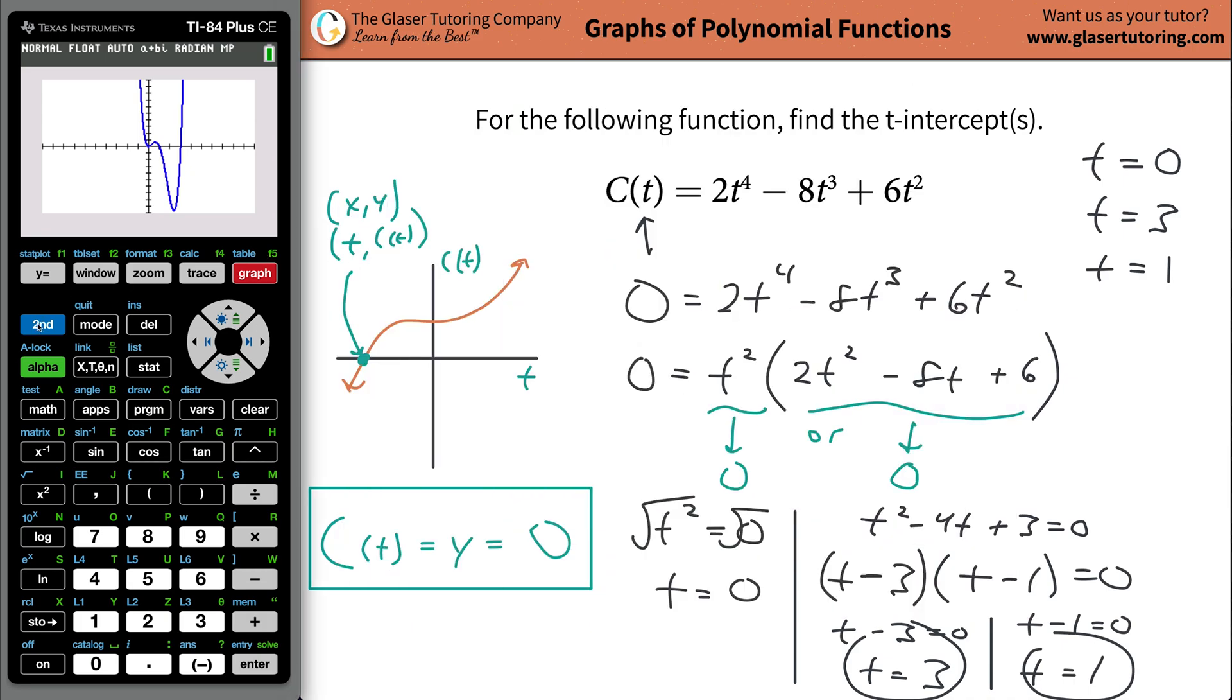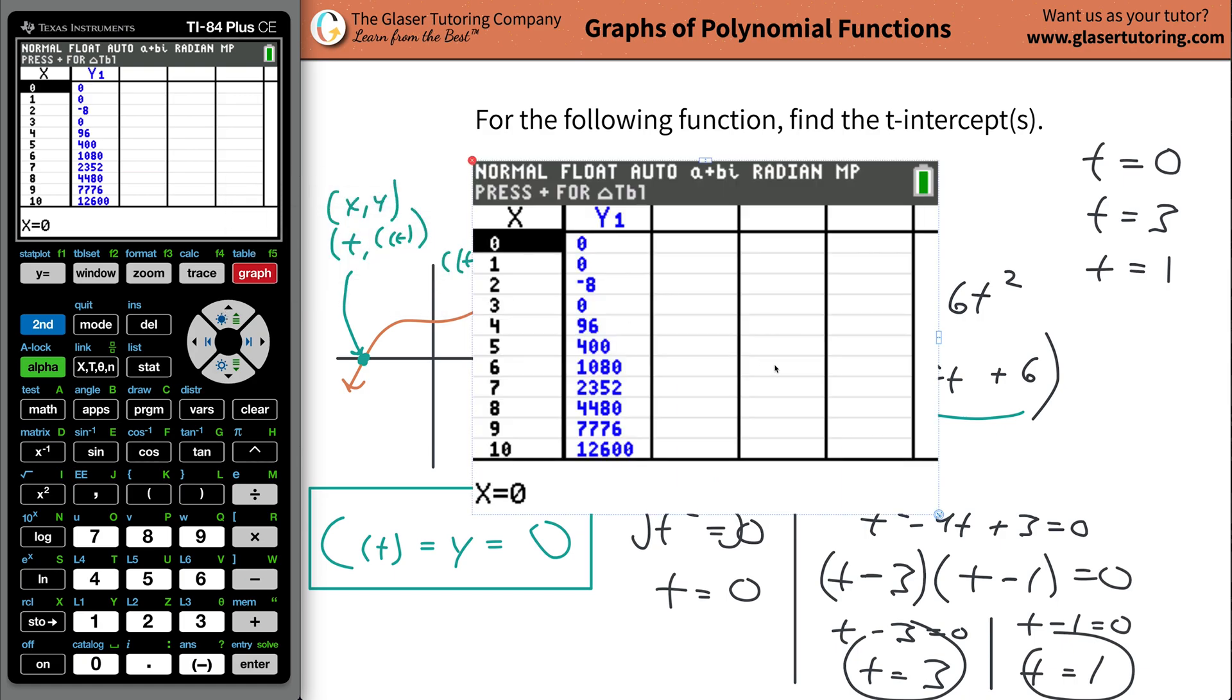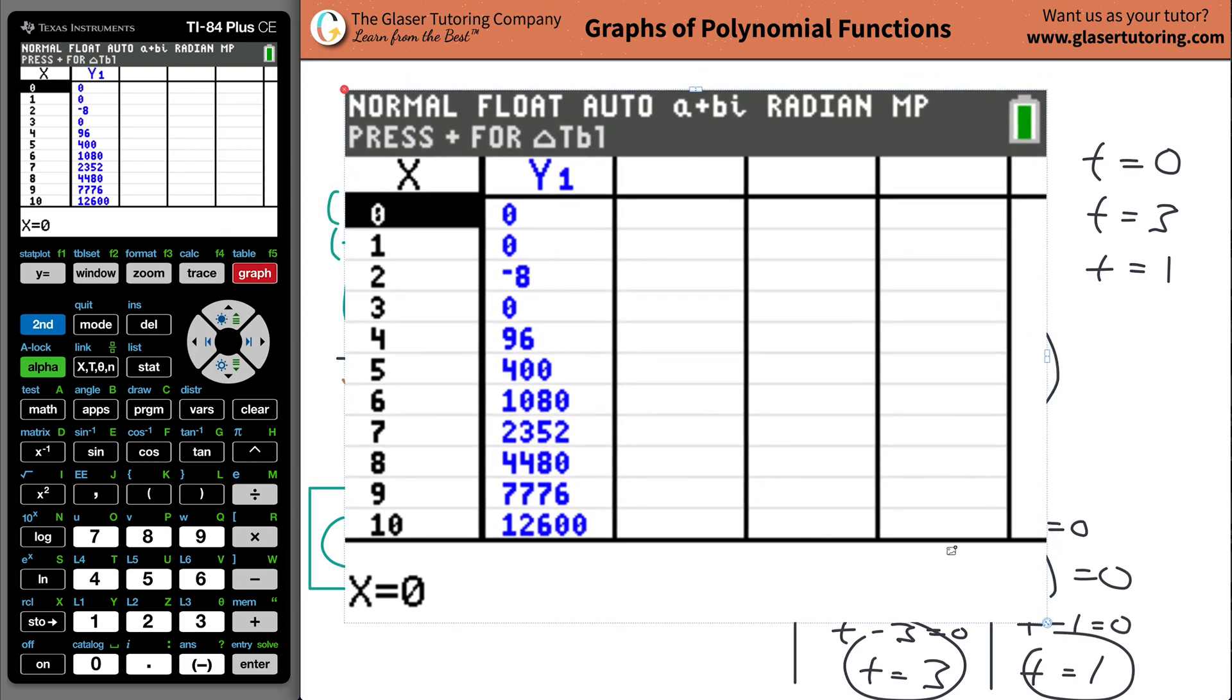Now if you wanted to see it in the table form, just go to second graph. Pull out your table. And what you're going to do is you're going to look for, remember, we defined that the t intercepts are going to be the locations or the values of t. And this problem, the x, remember because I couldn't use t in the calculator. But it's going to be the value of x where the y or the function's value is zero. So the corresponding now x values are going to be those x intercepts or AKA t intercepts. So zero, one, and three.